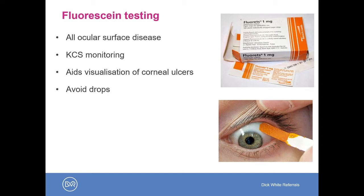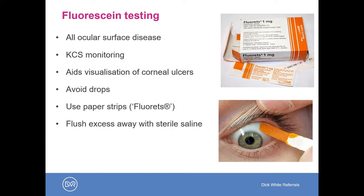My top tip for fluorescein application is to avoid the use of drops in vials, as these can be very messy. Instead, I prefer fluorescein-impregnated paper strips. You just need to moisten the end of the strip before direct application to the dorsal bulbar conjunctiva, then allow a blink to occur before irrigating any excess fluorescein away with sterile saline. Ideally you would view the eye through a cobalt filter, which excites the fluorescein, but you'll do a decent job also using just white light.